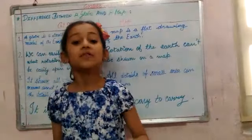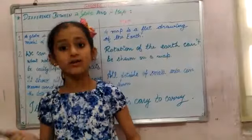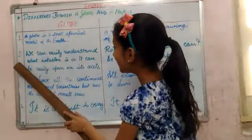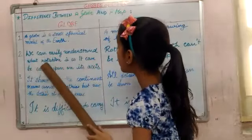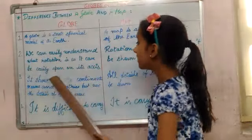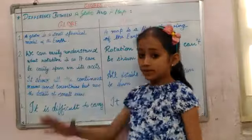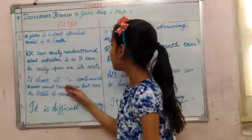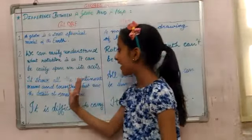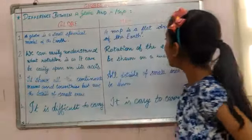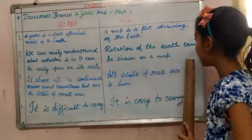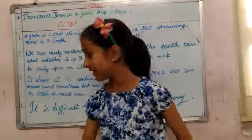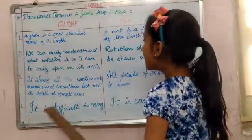Number two: a globe can be spun on its axis, so we can easily understand the rotation of the earth. The rotation of the earth cannot be shown on a map, as a map is a plain flat drawing of the earth.